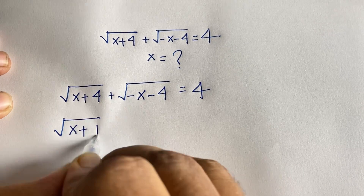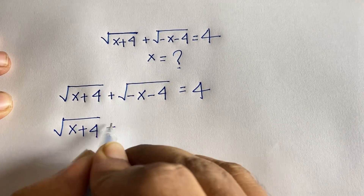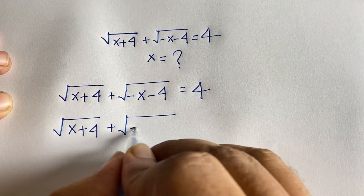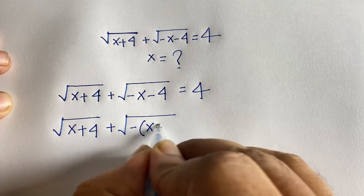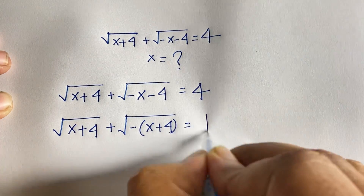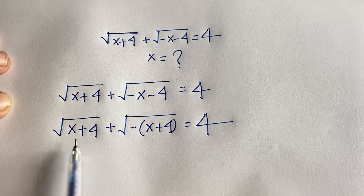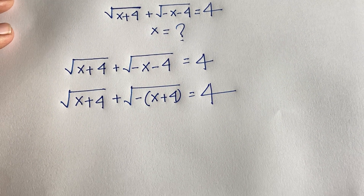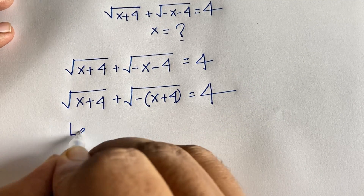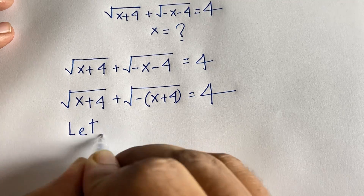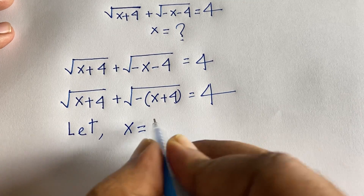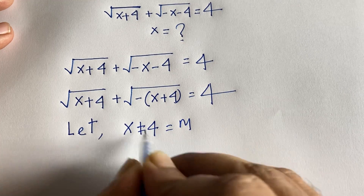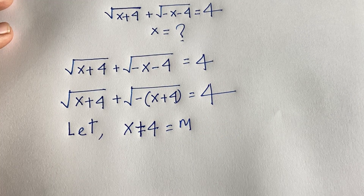Here is √(x+4) plus square root, and in this case I can see that minus is common in the second term, so it will be √(x+4) plus √(-(x+4)) equals 4. Now we let x+4 equal to m.